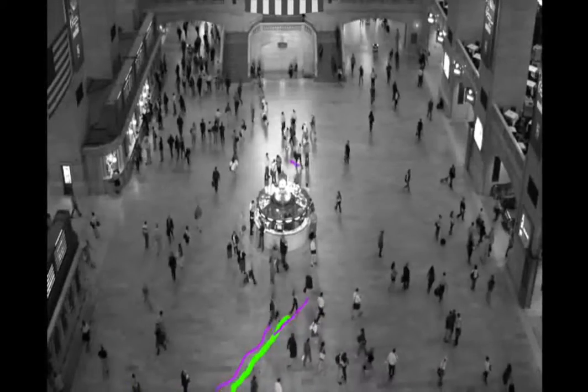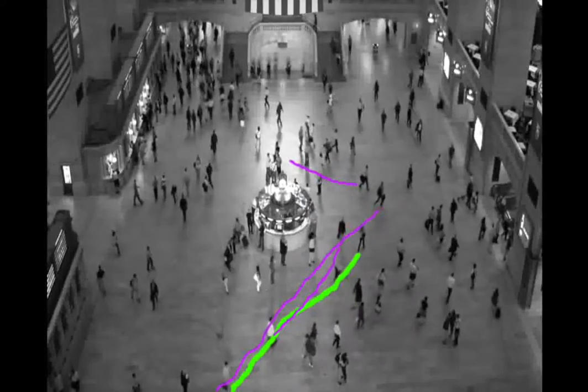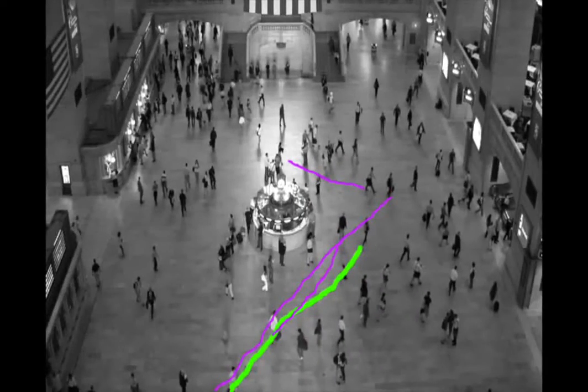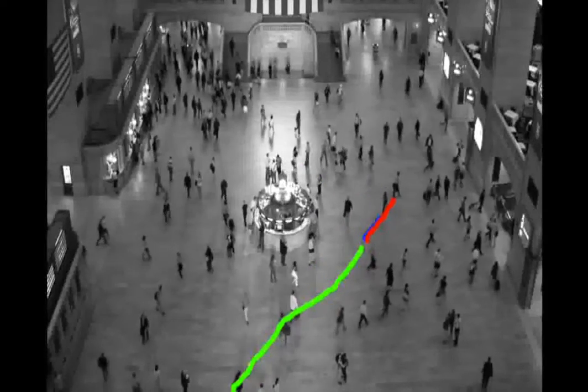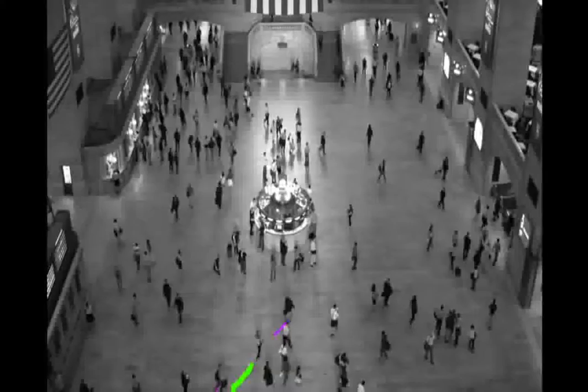The task that we are interested in is to predict the trajectories of pedestrians given short history of their and their neighbor's past behavior. Therefore, as the input feature we are considering only the trajectories of the pedestrians in the form of Cartesian coordinates.